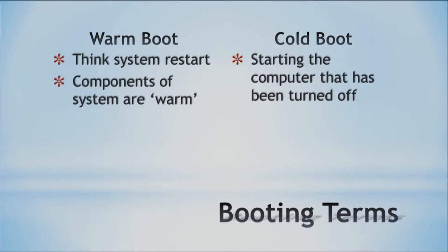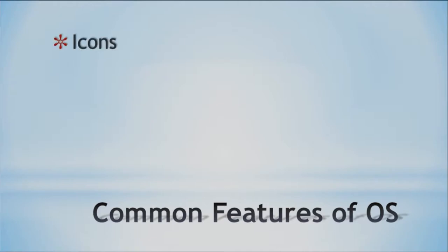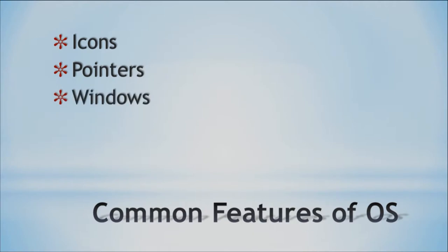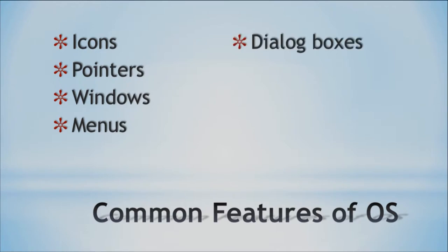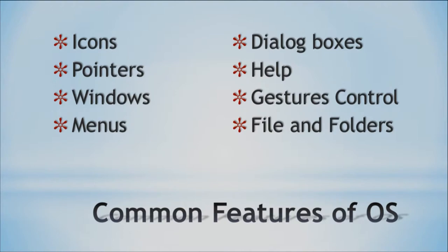Within our operating systems we have some common features. Common features of operating systems include icons that we see on our desktop, pointers which are your mouse pointers to select and click things, different windows that appear when you open a new application, menus that provide functionality within applications, dialog boxes, help menus, gesture controls for trackpads, and files and folders. These are all common features of all operating systems. We interact with our operating systems daily.